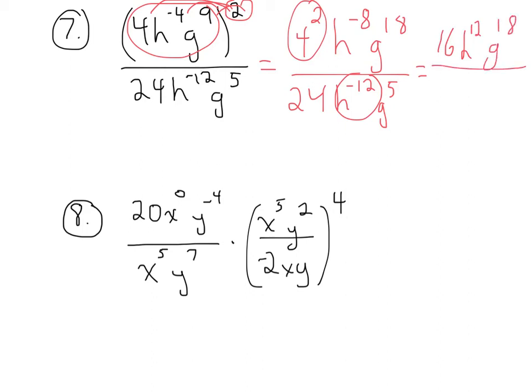In the denominator now, we have 24. And then I'm going to move this to the denominator, because it's a negative exponent, which gives me h to the negative 8th. I'm sorry, it's no longer negative when you move it. It gives you h to the 8th, and g to the 5th. I'll leave it to you to do the final cancellation there.